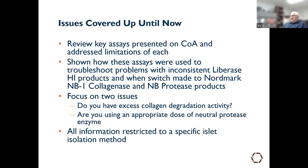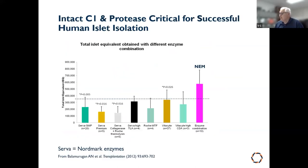Summary: the key take-home message is to ensure you have excess collagen degrading activity and are using the appropriate dose of neutral protease. A study of approximately 90 islet isolations in Minnesota, published in 2012 by Boller and colleagues, concluded you need intact Class 1 collagenase and the right protease. This is why the NEM mixture uses Vitacyte Collagenase HA — which has intact Class 1 collagenase — along with the Nordmark neutral protease.